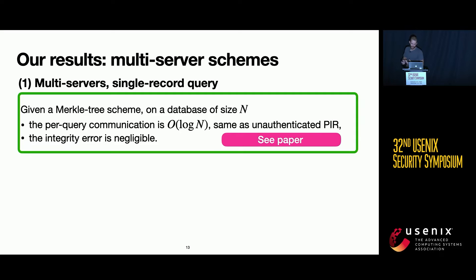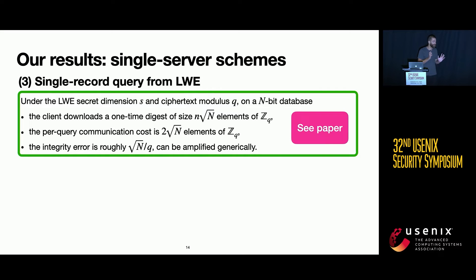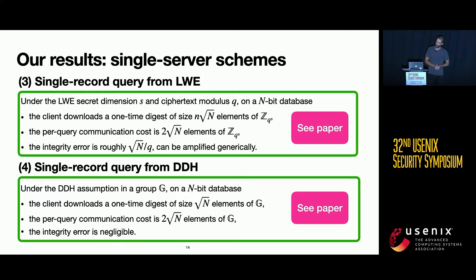Our results in the multi-server schemes are as follows. We have a multi-server scheme that enables a client to retrieve a single record, and given a Merkle tree, achieves the same complexity as an authenticated PIR with negligible integrity error. We also propose single-server schemes: the first is based on the LWE assumption and is essentially an authenticated version of SimplePIR, and we also have a scheme based on the decisional Diffie-Hellman assumption.